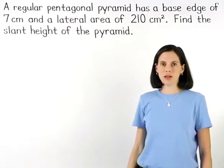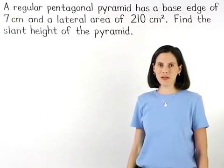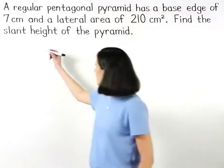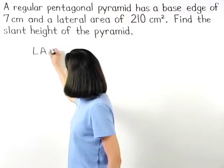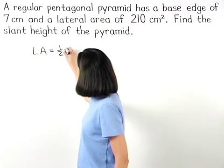Remember that the formula for the lateral area of a pyramid is one-half perimeter of the base times the slant height.